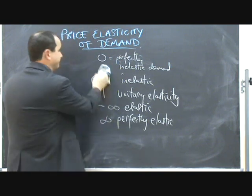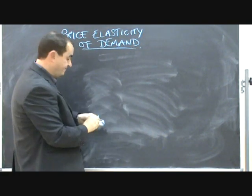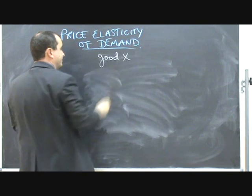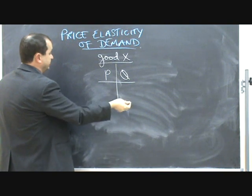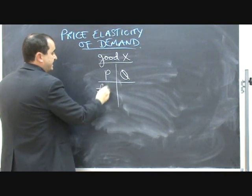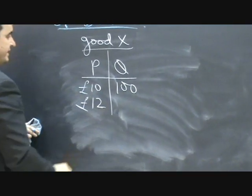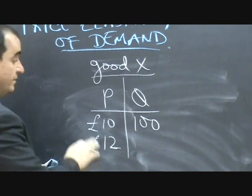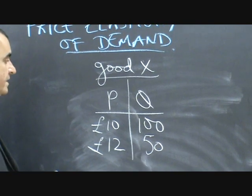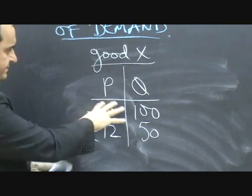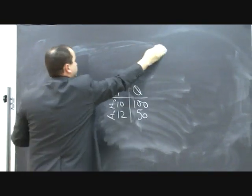Let's work through an example. If we know that for good X, when the price is £10 the quantity demanded is 100 units, but when the price rises to £12 the quantity demanded falls — let's say it falls to only 50 — let's work through using the equation. I'm going to leave those figures there and rub out some of this so that we can work through the equation.